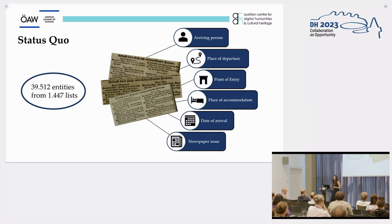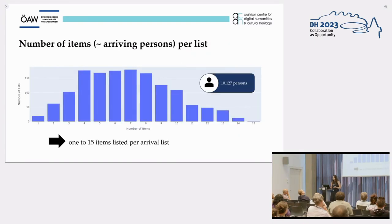As an output of step two, in addition to full text and metadata, we have gained comprehensive structured data on multiple arrival lists. Currently this dataset consists of almost 40,000 entities identified within over 1,400 lists. The investigated arrival lists vary between 1 to 15 entries, with 4 to 8 persons listed per newspaper being the most common values — meaning approximately 6 to 18 arrivals of upper class persons were documented per week.